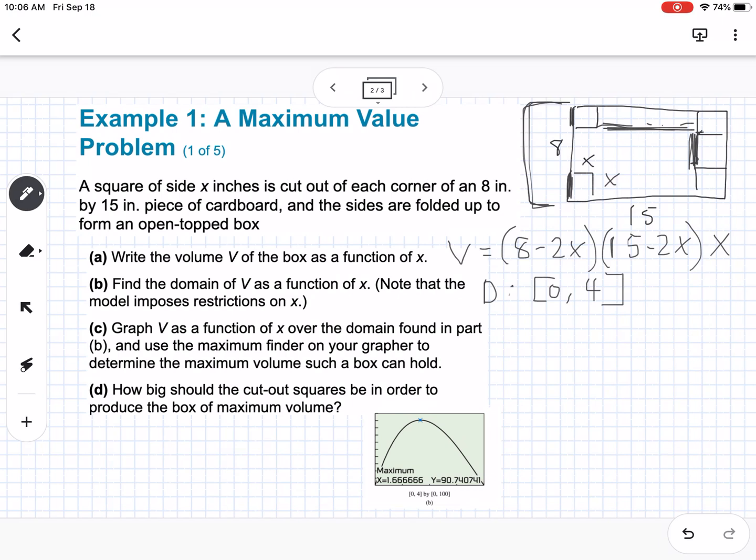Okay, then it says to graph V as a function of x over the domain found in part B and use the maximum finder on your grapher to determine the maximum volume such a box can hold. So I graphed, I just pulled the graph from the PowerPoint, but this is what it should look like if you graph it. So that tells you that the maximum volume would be 90.7 inches cubed and that maximum volume would occur when your x value is 1 and 2/3rds inches. So maximum volume is when x is equal to 1 and 2/3rds inches. And that would cause your y value, that's your maximum, to be 90.7 inches cubed.